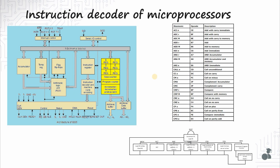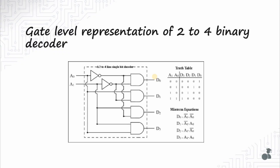From the above two examples, you must have understood why we need a decoder. Now, let's see how to write the Verilog code for a decoder, starting with the data flow model. To write Verilog code in data flow model, you need to know the gate level representation of your circuit. The gate level representation of a 2-to-4 binary decoder is as follows: we need to satisfy the truth table, so when a1 and a0 are 0,0 only d0 should be 1, when the input is 0,1 d1 should be 1, and so on. This is the gate level representation.